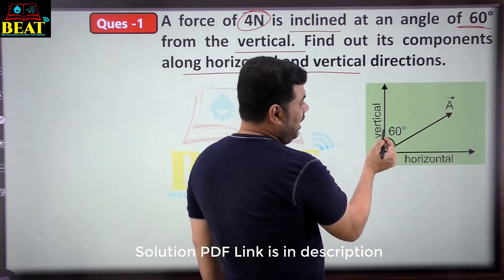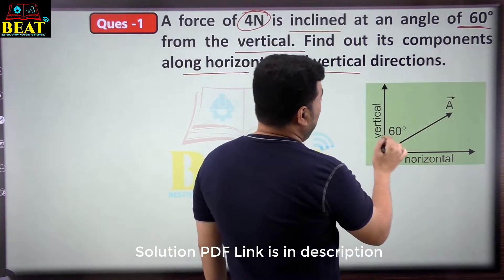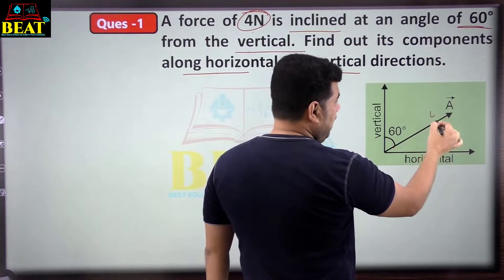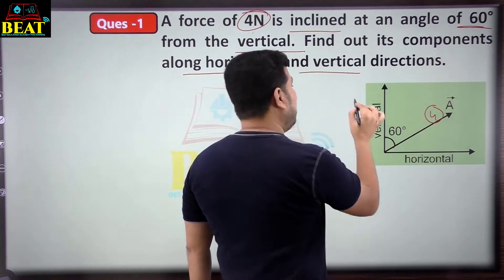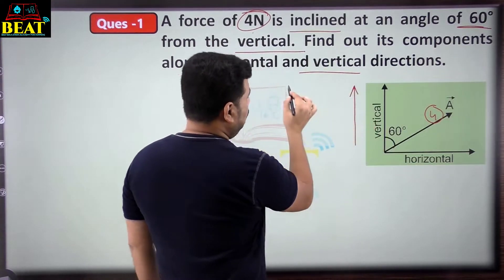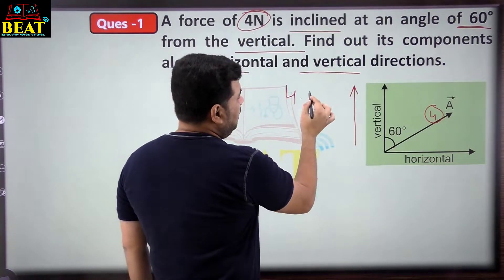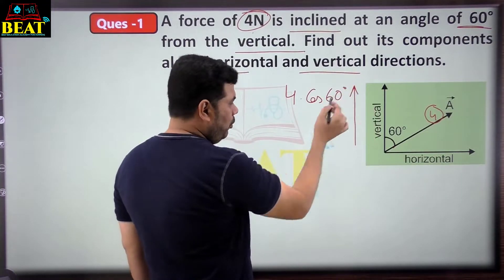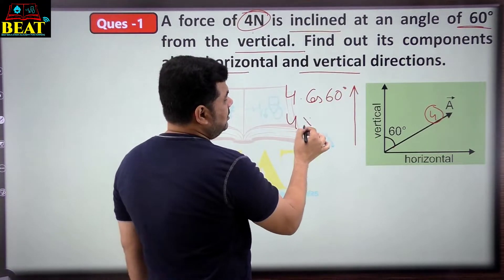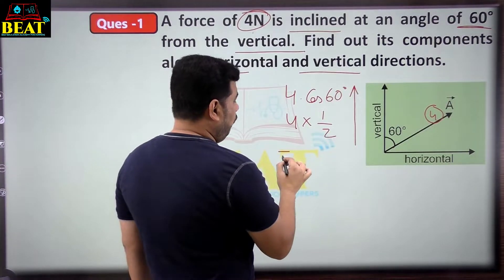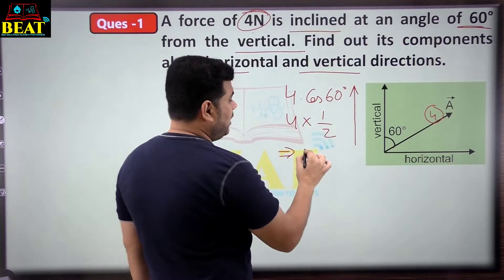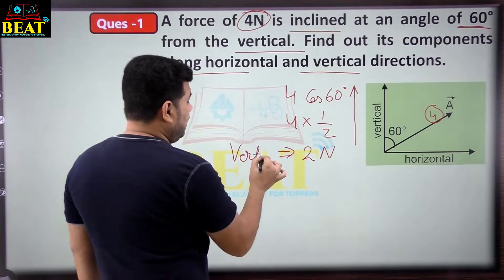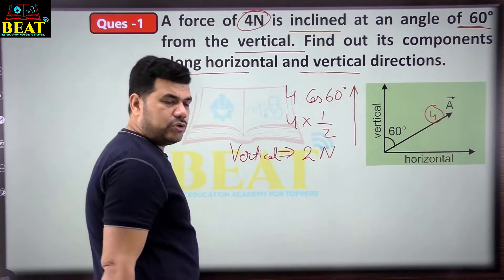The horizontal component is the one in the horizontal direction, the x-direction. Here 60 degrees is given. The side where the angle is, cos applies — so the vertical component is 4 cos 60. The value of cos 60 is 1/2, so 4 × 1/2 = 2 Newton. The vertical component is 2 Newton.